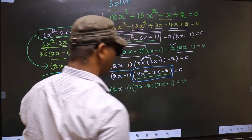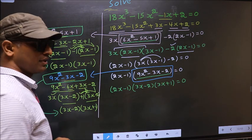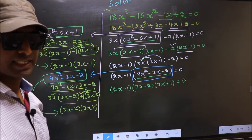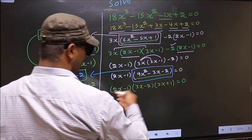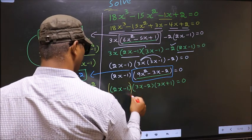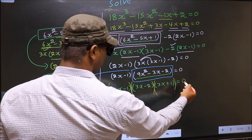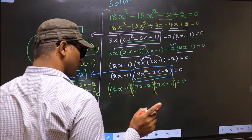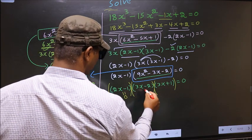They told us to solve, which means we should get the values of x. And over here we have a product of brackets equal to 0. So to get the x values, we should equate each bracket to 0.